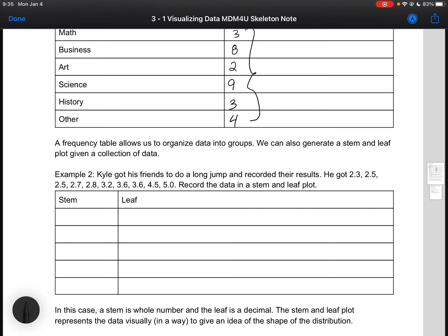In this example, Kyle got his friends to do a long jump and recorded the results. He got 2.3, 2.5, 2.5, 2.7, 2.8, 3.2, 3.6, and then the remaining. So what we're going to do is record the data in a stem.